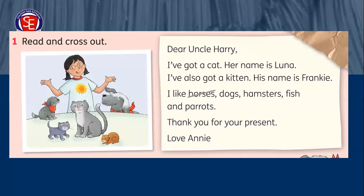Vamos a ir leyendo todos juntos. Dice: dear Uncle Harry — querido tío Harry. I got a cat. Her name is Luna — tengo un gatito y su nombre es Luna. I also got a kitten — también tengo un gatito pequeñito. His name is Frankie. Y dice después: I like horses, dogs, hamster, fish, and parrots. Es donde tenemos que nosotros tachar cuáles son los animales que no aparecen en la fotografía. Horse ya está tachado porque no vemos un horse. Tenemos hamster, fish, and parrots. Y luego dice: thank you for your present. Love, Annie.